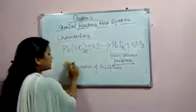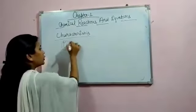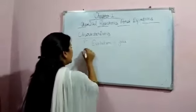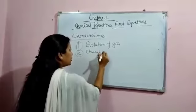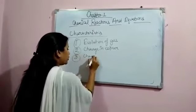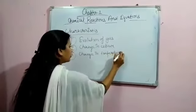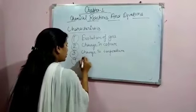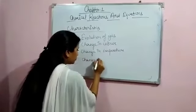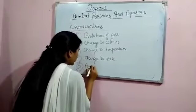So let us revise all the characteristics at one go. First was evolution of gas. Second, change in color. Third, change in temperature. Fourth, change in state. Fifth, formation of precipitate.